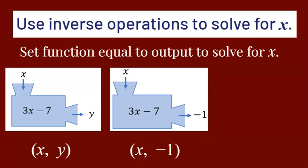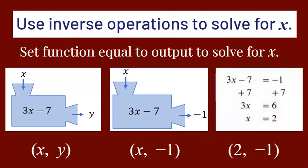How do we figure out the input? If you go backwards through your box, instead of multiplying by 3 and subtracting 7, you go in reverse order using inverse operations. So instead of subtracting 7, you will add 7 to negative 1, and instead of multiplying by 3, you will divide by 3. Really, you're solving an equation: 3x minus 7 equals negative 1. Add 7 to get positive 6, then divide by 3 to get positive 2. The input is 2 when the output is negative 1, represented by the ordered pair (2, −1).